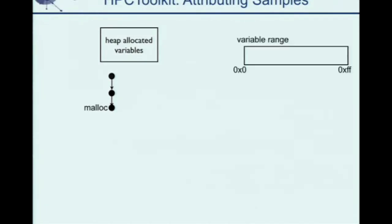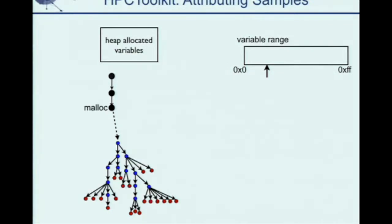We wrap all malloc functions. When we get an allocation, we determine the call path for that allocation and record the memory range allocated. This range can be used as the unique identity for that variable, either by the variable's name or by its allocation call path. When we take an address sample, we use the effective address captured and find which memory interval it touches. This determines the call path of the sample and links it to the allocation point.